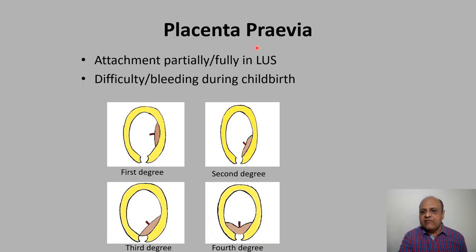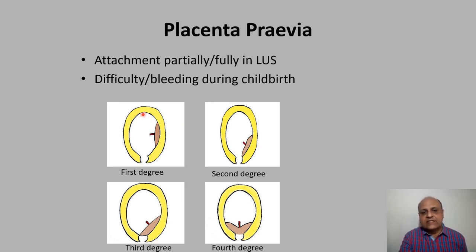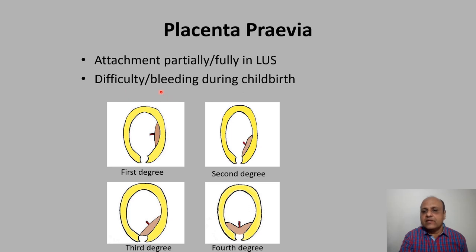First is placenta previa. Normally the placenta is attached to the upper uterine segment — either to the fundus or the upper part of the body. But when the placenta is attached partially or fully in the lower uterine segment, this is called placenta previa, and this may cause difficulty or bleeding during childbirth. Here we have the placenta attached to the lower part of the body.